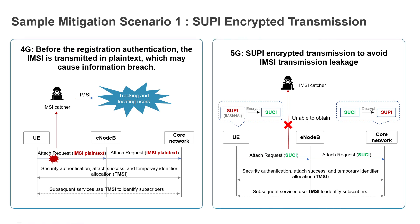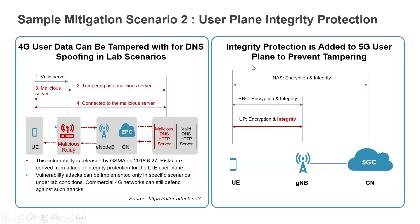The second mitigation scenario covers user plane integrity protection compared to 4G. In a 4G setup, suppose there is a valid user but there is a malicious relay performing a man-in-the-middle attack between the UE and eNodeB — it comes in between and sends malicious traffic to the core network or redirects the core network to a malicious DNS. How do you ensure that even after authentication, the user plane session data is authenticated? They introduced integrity protection added to the 5G user plane to prevent tampering.